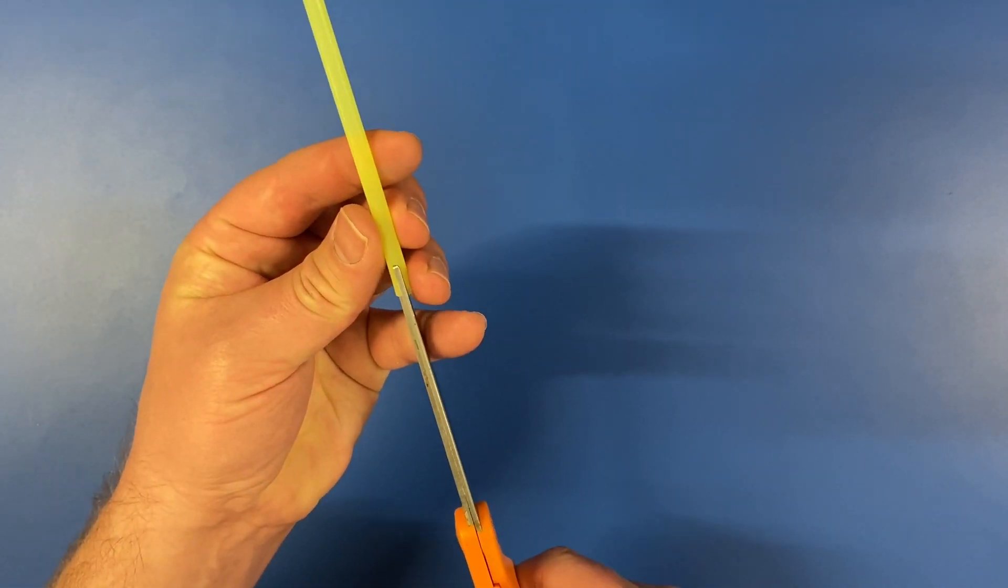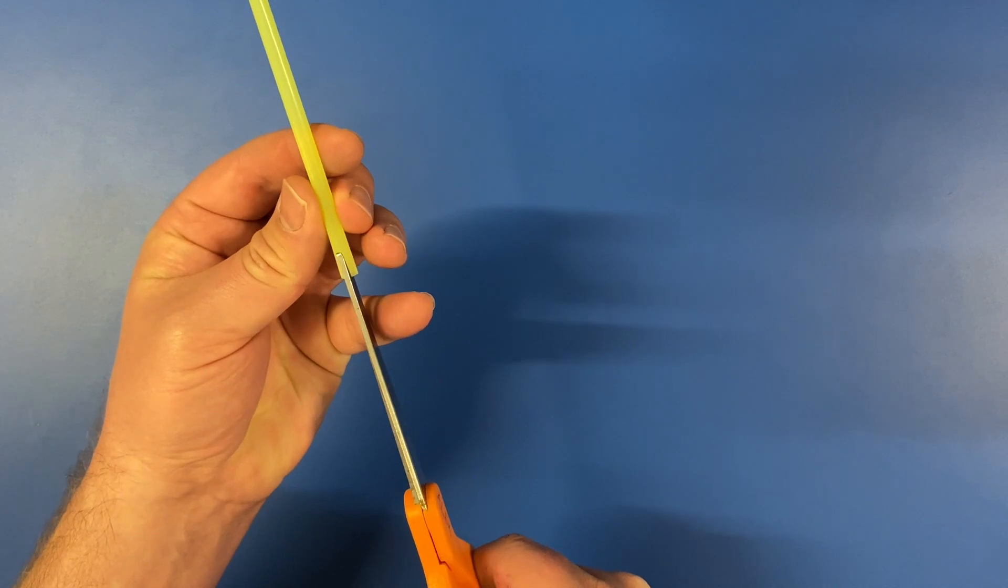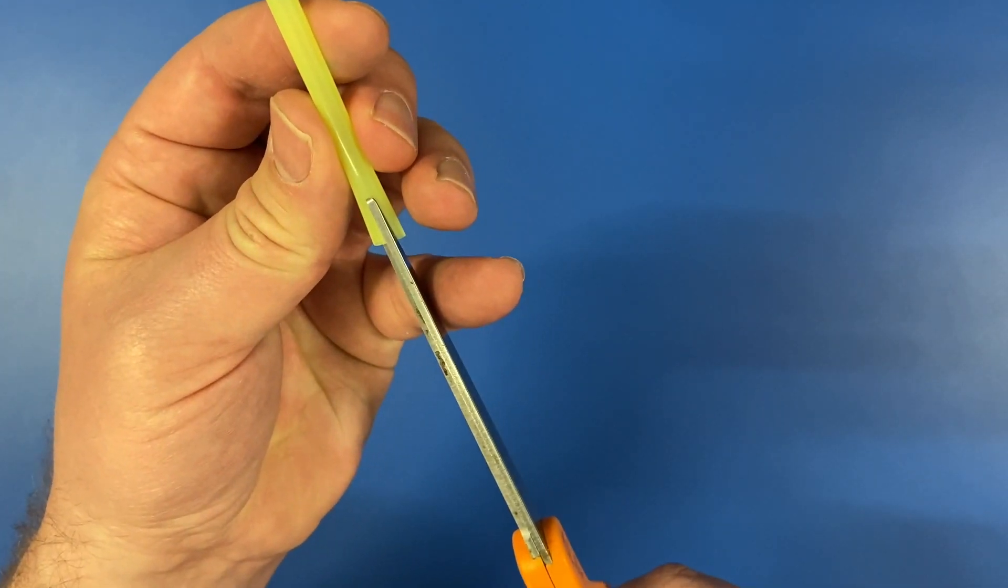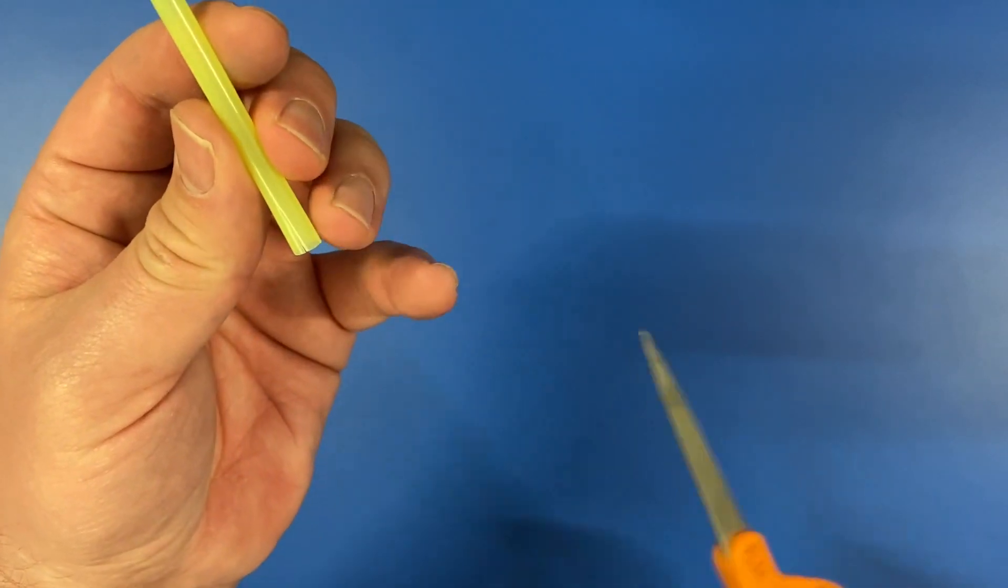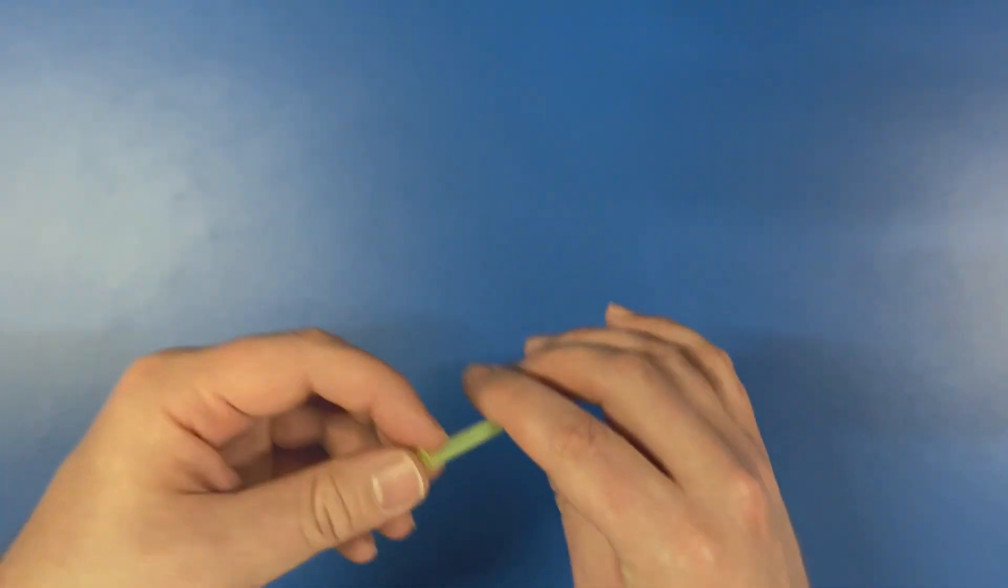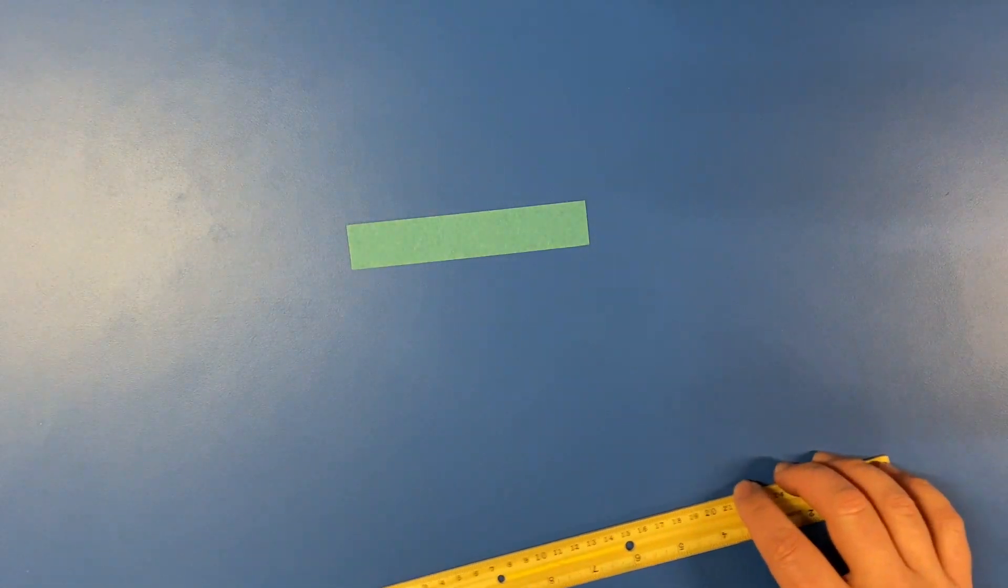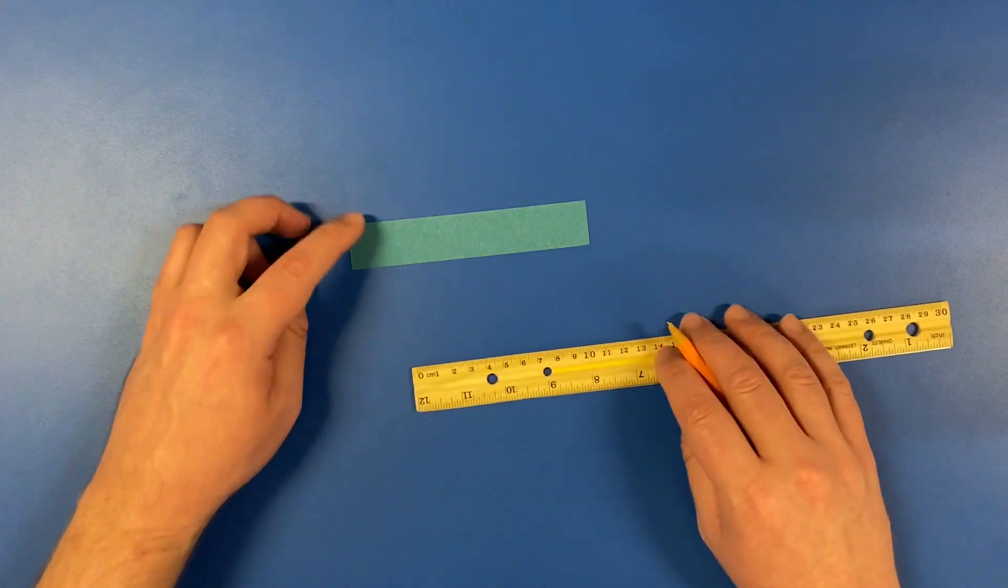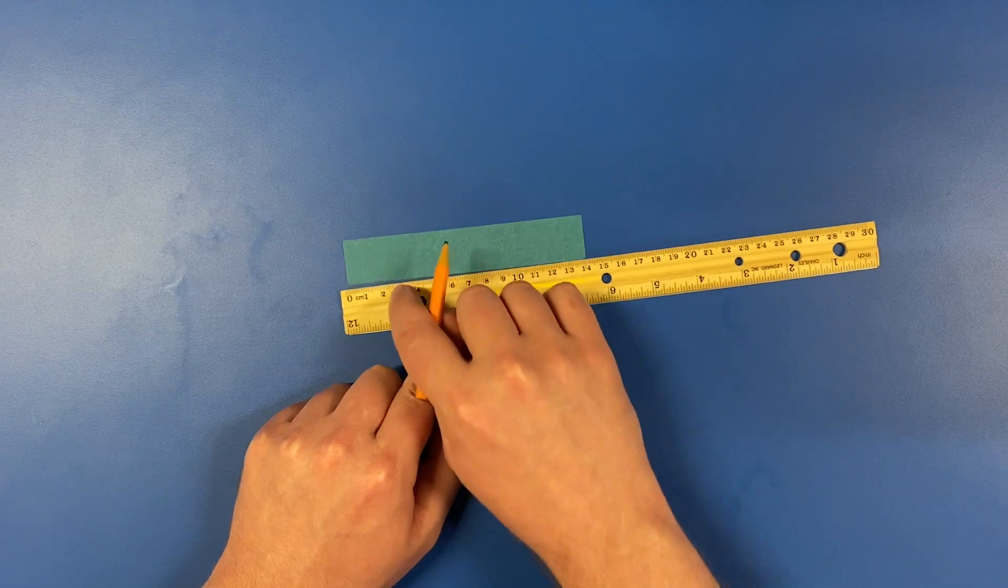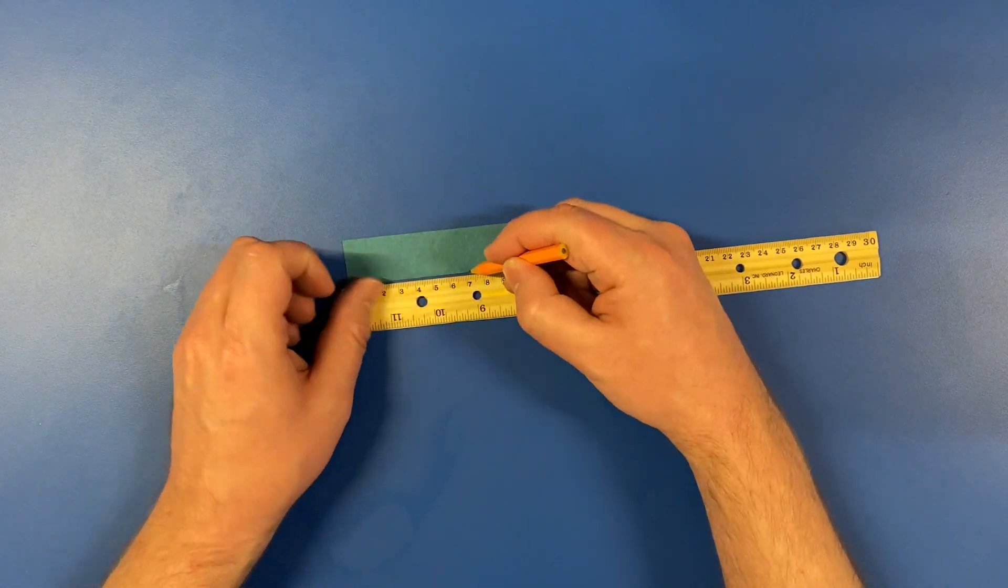First, cut a couple little slips into the end of your straw. This will make it easier to tape to the paper. Next, measure your piece of paper and find the middle. Looks like this one's about 14 centimeters long, so I will make a mark at 7 centimeters.